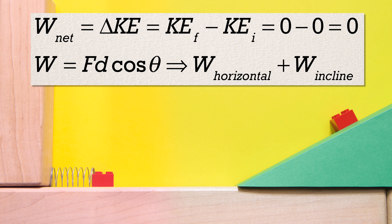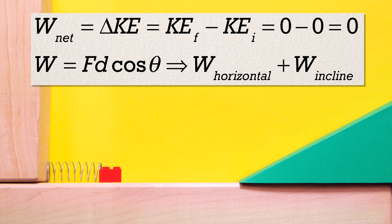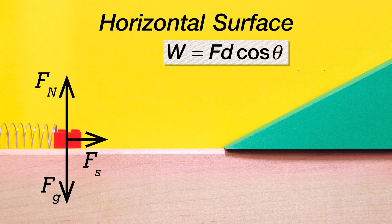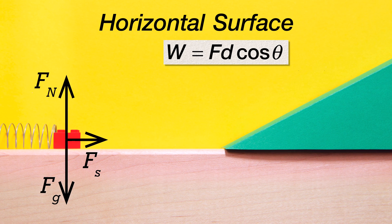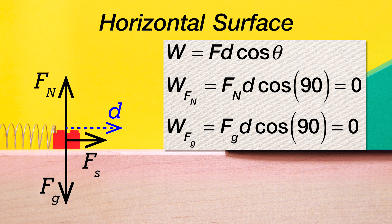Let's start with the net work on the horizontal frictionless surface. We need to draw a free body diagram of the forces acting on the block while it is being pushed by the spring on the horizontal surface. The force normal is straight up, the force of gravity is straight down, and the force of the spring is to the right. The direction of the force normal is straight up and the direction of the force of gravity is straight down. Therefore, the angle between the direction of the displacement of the block — which is to the right — and those two forces is 90 degrees. Because the cosine of 90 degrees is zero, the work done by both the force normal and the force of gravity on the block while it is on the horizontal surface are both zero.